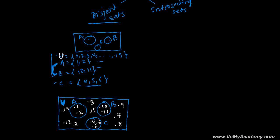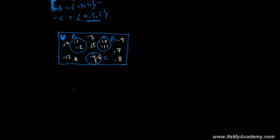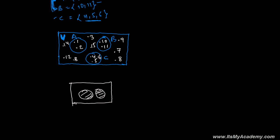There may be just two sets which are independent — none of the elements of one set appear in the other. In that case we say these are disjoint sets.